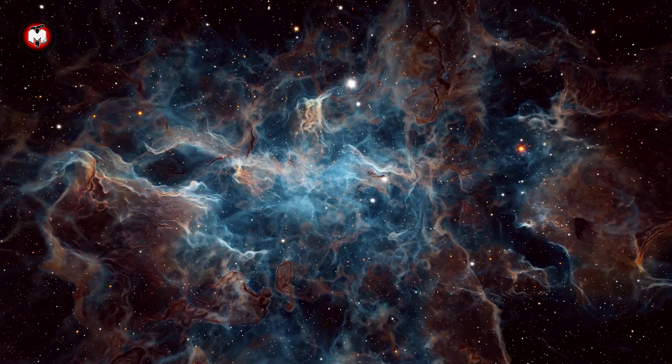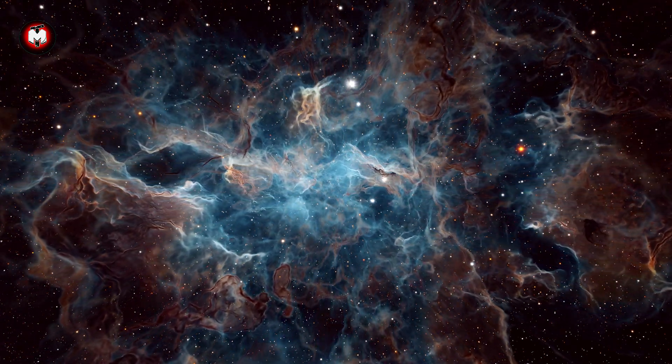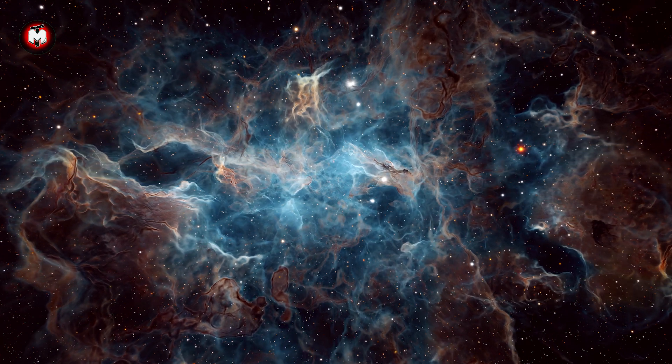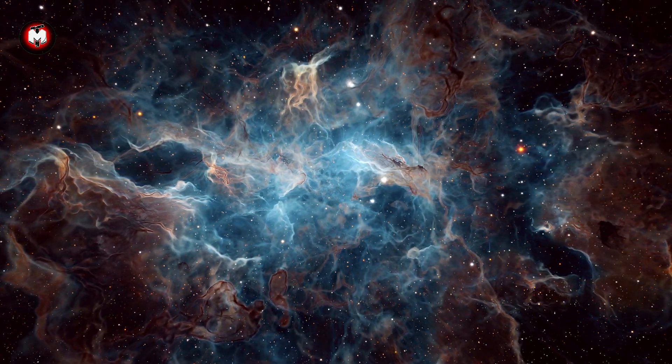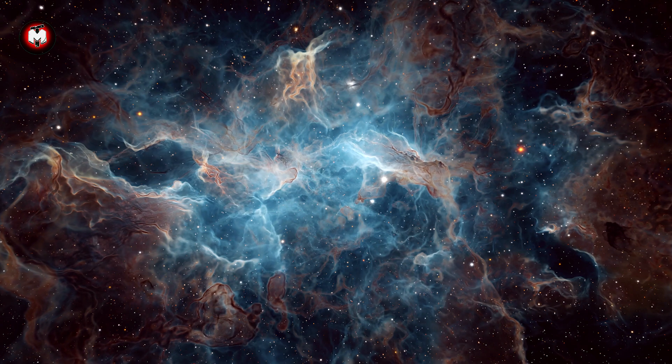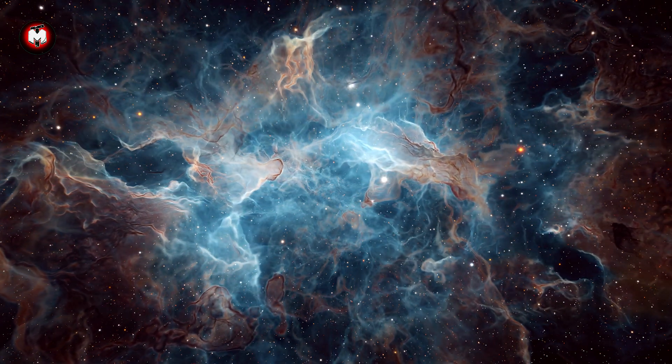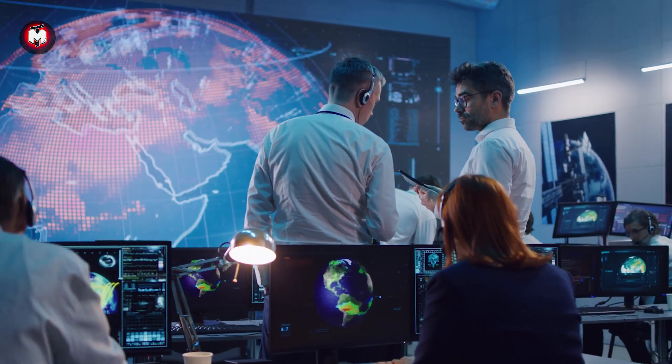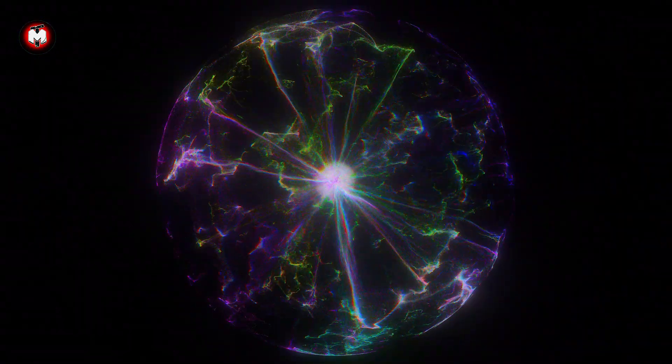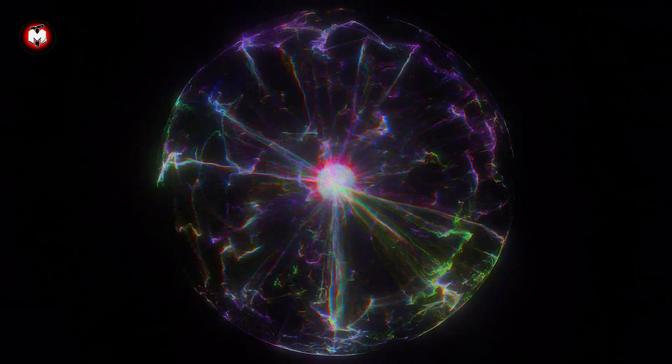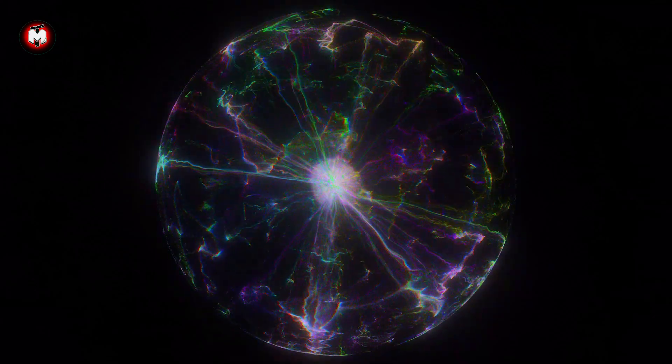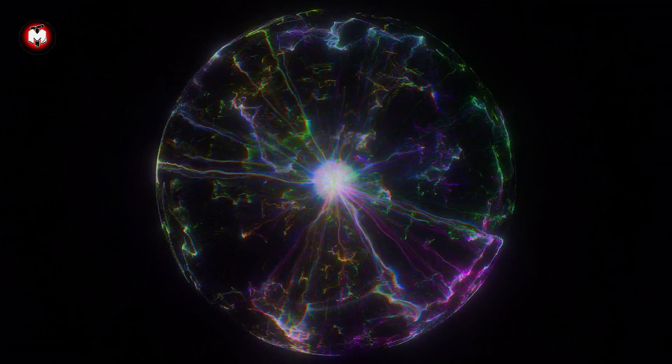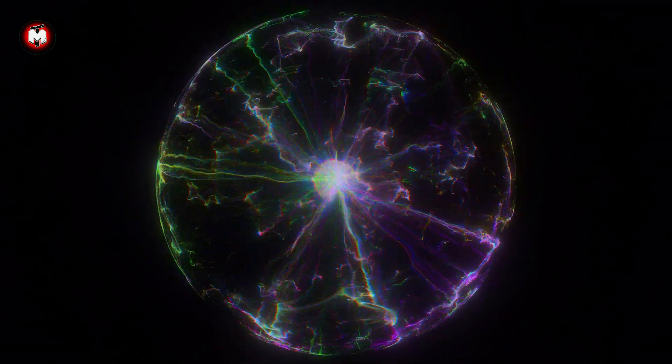The magnetic field mystery suggests that our local corner of the Milky Way is more structured and organized than we thought. We might be moving through a region where multiple star systems have influenced the magnetic environment. Some scientists theorize that we're traveling through what's called the local bubble, a region of space cleared out by ancient supernovas, with magnetic fields shaped by these cosmic explosions. The Voyagers are our first scouts in this alien territory.